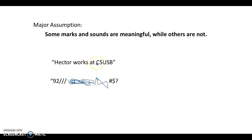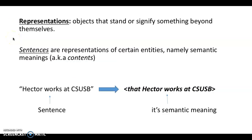When I utter 'Hector works at CSUSB', that sound is meaningful. But when I utter something like 'blah blah blah', that sound is not meaningful. So we are assuming that some marks and sounds are meaningful while others are not. Why is that the case? One intuitive response is that some marks or sounds are representations of something else. A representation is a type of object that stands for or signifies something beyond itself.